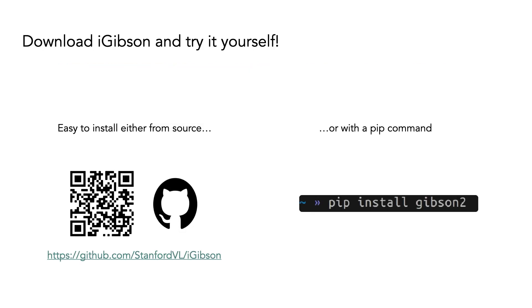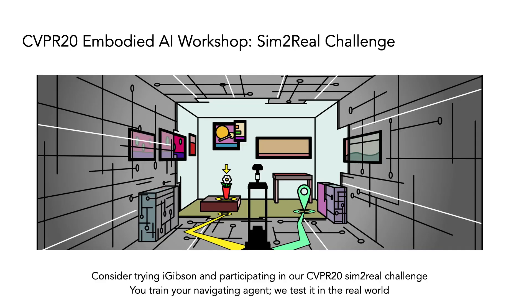The interactive Gibson environment is very easy to install, either from source from our GitHub repository, or just by executing a pip command, both in Python 2.7 and 3+. You may want to give iGibson a try and participate in the Sim2Real challenge we are organizing for CVPR20. If your agent in iGibson is one of the best entries from the simulation phase, we will test it for you on a real robot in a real apartment.